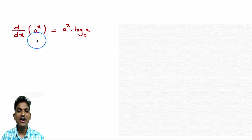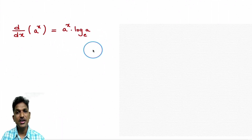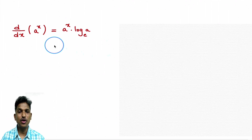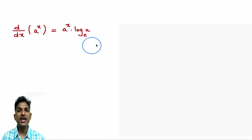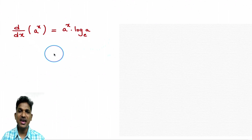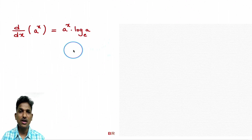You see this formula: derivative of a power x is a power x into log a base e. This is one of the 23 formulas. Here, one thing to remember — a is a positive real number. You cannot take a as negative. Let's see how problems come related to this formula.